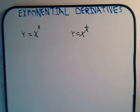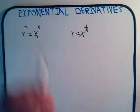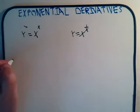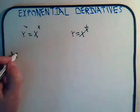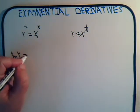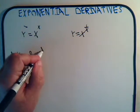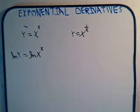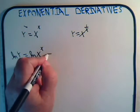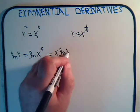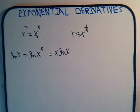As in the last video, let's start with this one. We take the natural log of both sides of the equation, and we'll have the natural log of y equal the natural log of x raised to the x power. Using the property of logarithms, we can write this as x times the natural log of x.